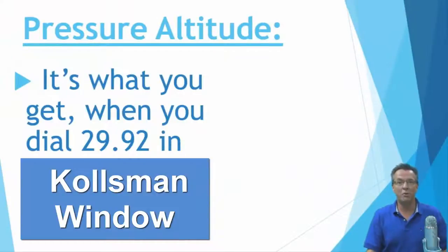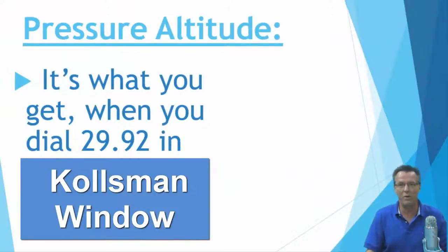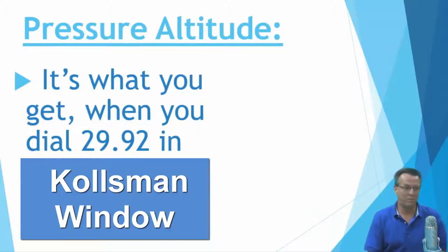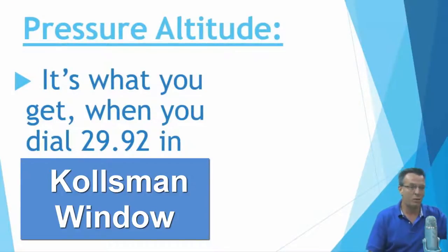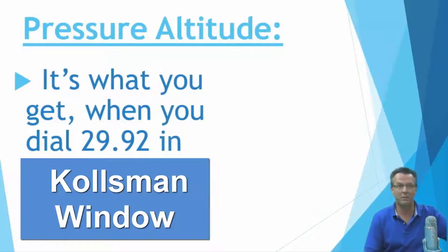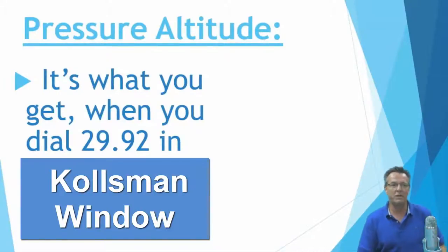What is pressure altitude? Pressure altitude is what we get when we dial 29.92 in the Kohlsman window. Most all of us have trouble with this — private level, commercial level, CFI. I work with add-on pilots; they come back and you ask them what's pressure altitude, what's density altitude, and everybody gets them screwed up.